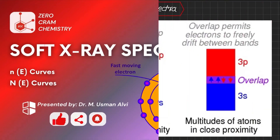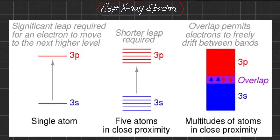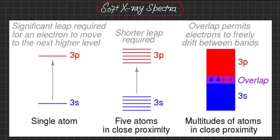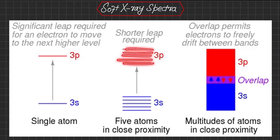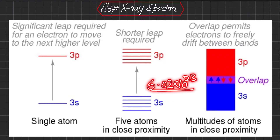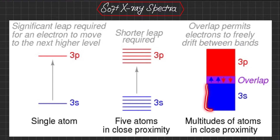In the previous lecture we studied about molecular orbital theory or band theory for atoms. If we see here, there is a single atom with a 3s orbital and a 3p orbital. However, if we collectively arrange the orbitals for approximately five closely placed atoms, these are the 3s and 3p orbitals of five atoms stacked together. In a mole there are approximately 6.02 × 10²³ atoms, so if we draw the 3s orbitals of so many atoms, they are so closely spaced that we call them bands.